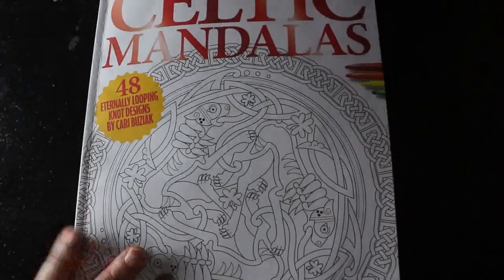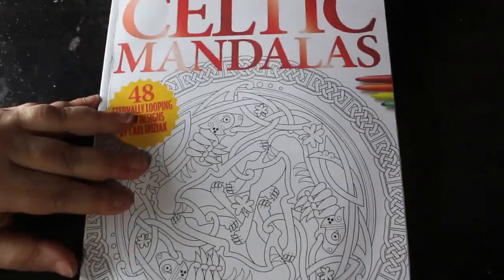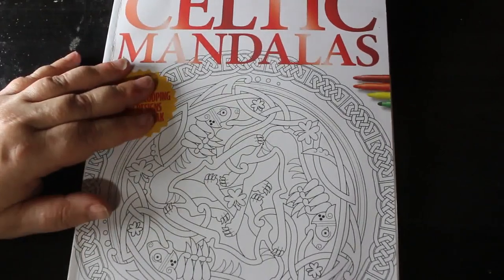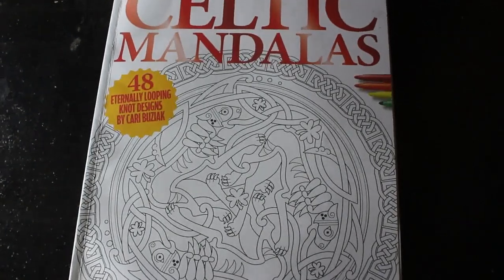So that is Celtic Mandalas Colour in Heaven collection from Colour in Heaven. Again, this is available online from Anthem Publishing or in all good supermarkets and news agents. I hope you've enjoyed this flip through and I will see you in the next one. Bye!